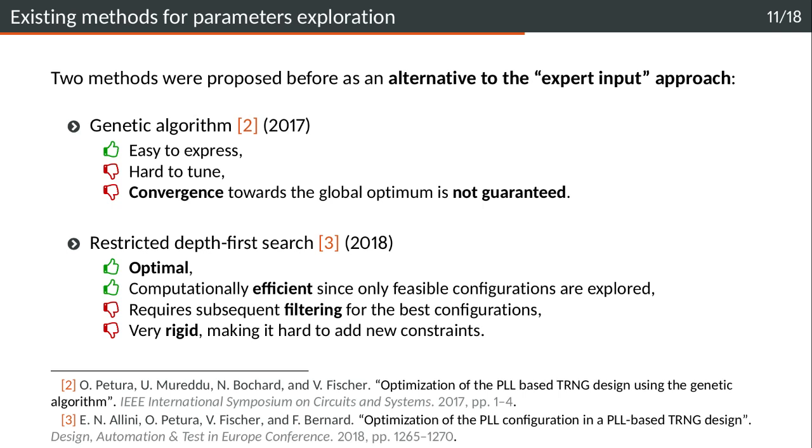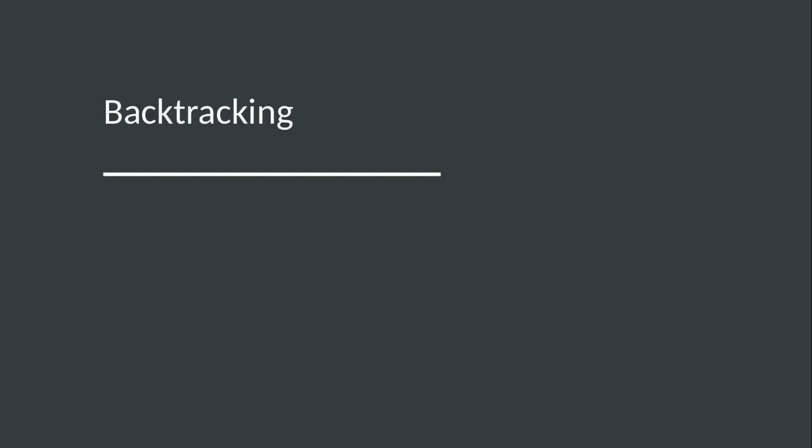One year later, another method was proposed, which is so-called restricted depth first search. In this case the results are optimal, we always get the best configurations for the PLLs. It's computationally efficient because only the feasible configurations are explored, but it requires subsequent filtering to get the best configurations. Moreover, the algorithm is very rigid because it's made of nested for loops, so it's very hard to add new constraints to it.